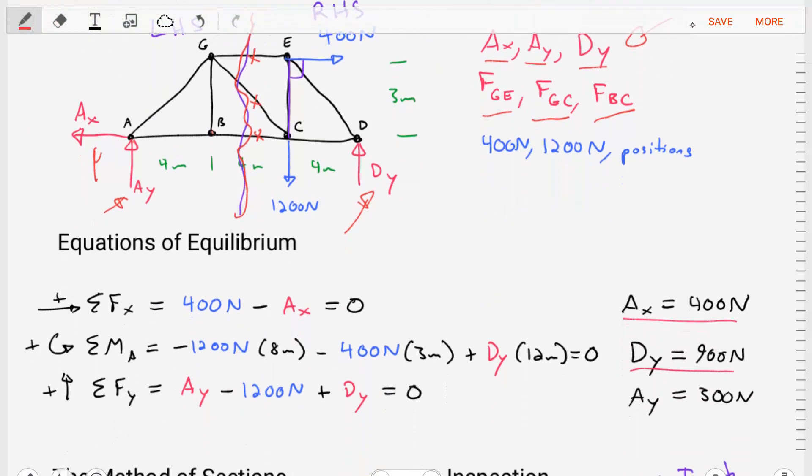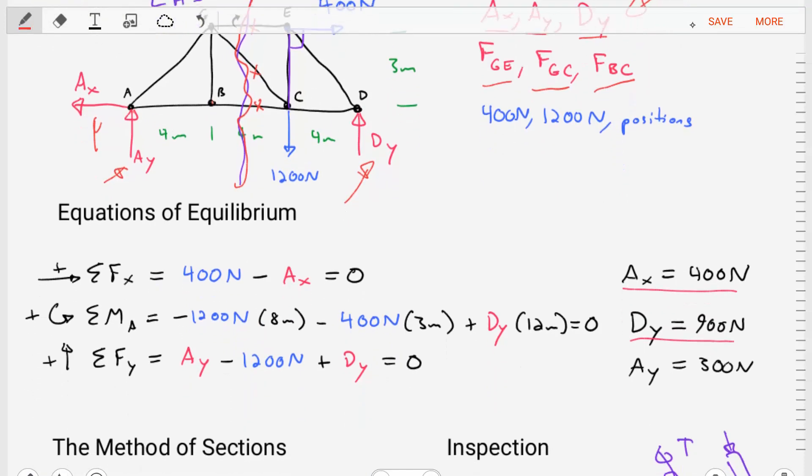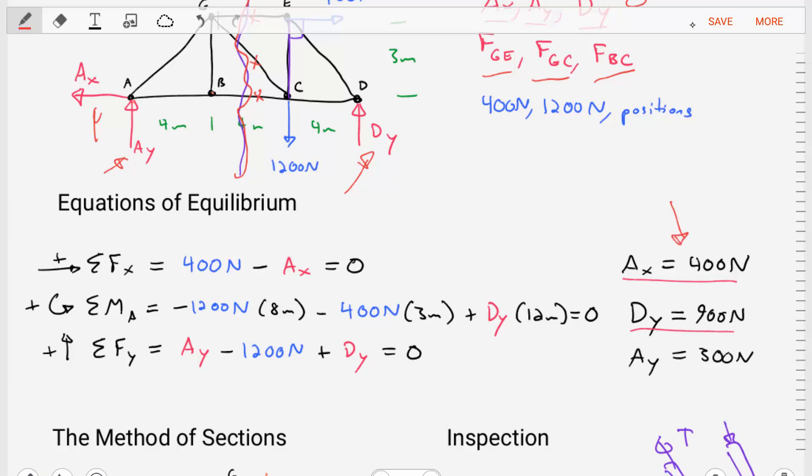So let's go ahead and do the sum of the forces in the X direction. That'll give us directly AX equaling 400 Newtons.